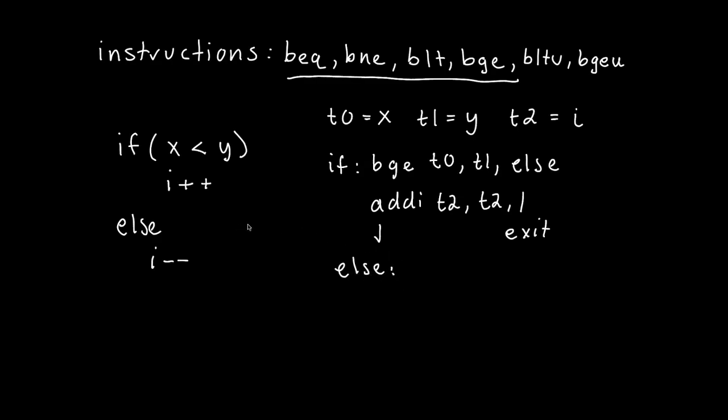So now we'll write our else condition. Else would only trigger if this was a false statement, a true statement in the RISC, and a false statement in the C code. And we will just say, add immediate, and it will be, we'll store it in t2. We'll take t2, which is i, and we will just add negative 1 to it. And we can just say, exit right here.